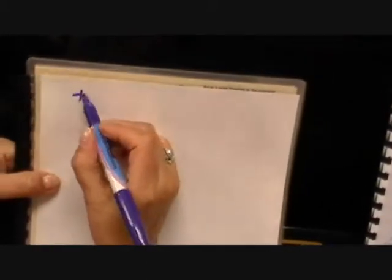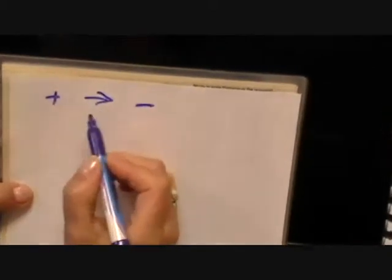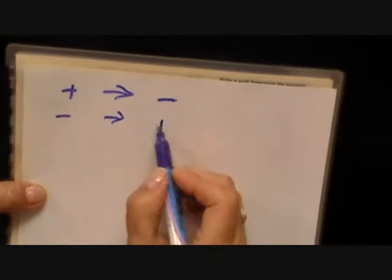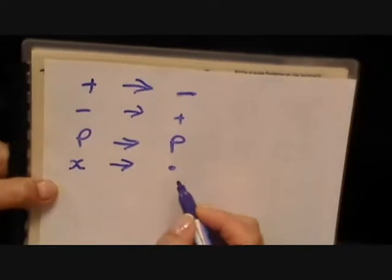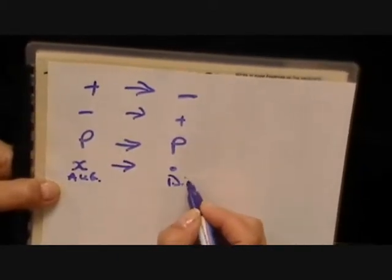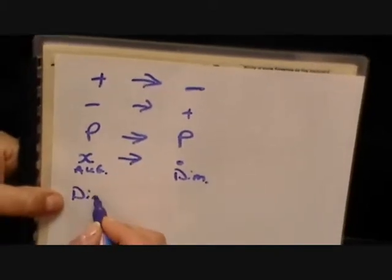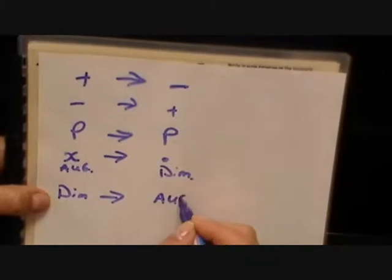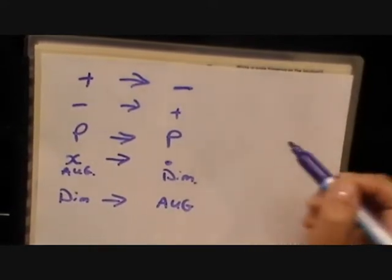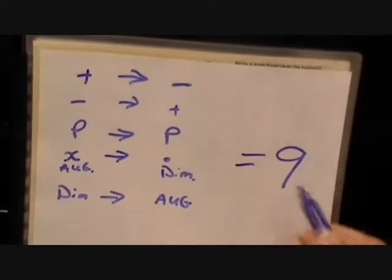Now I'm just going to write out some rules for you quickly so that you can remember how we do intervals and inverting, and they're really quite simple. If we have a major interval, it becomes a minor. If it's a minor interval on top and we invert it, it becomes a major. If we have a perfect interval and we invert it, it remains perfect. If we have an augmented interval, that means a larger interval, it will become diminished. If it's a diminished interval, it will invert to an augmented interval. So you just have to memorize that little pattern.